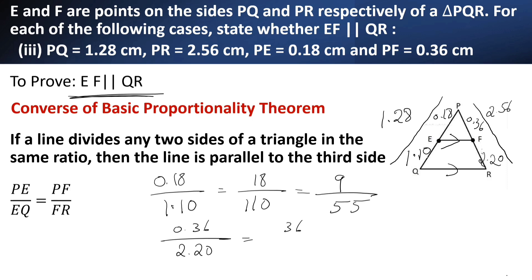This simplifies to 9 by 55. Here, you can observe that LHS is equal to RHS. So, EF is parallel to QR.